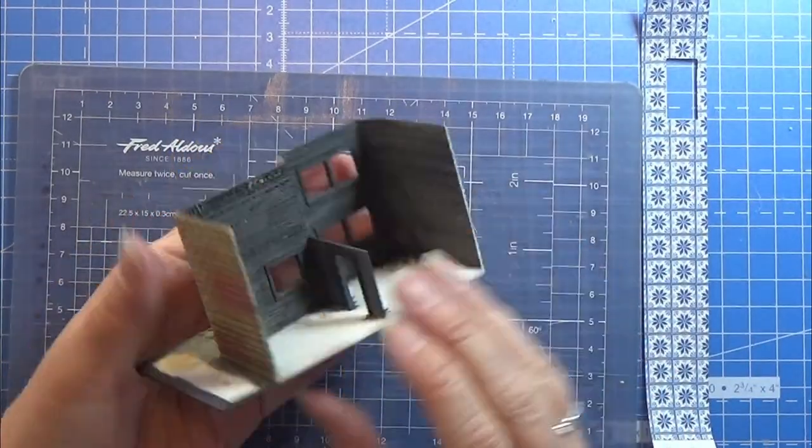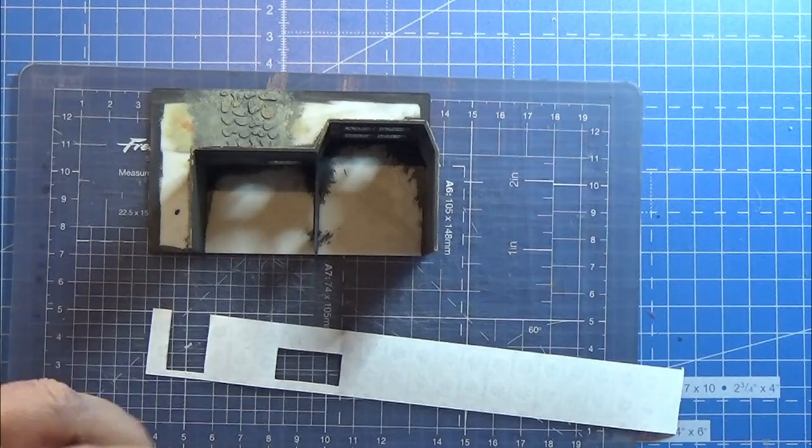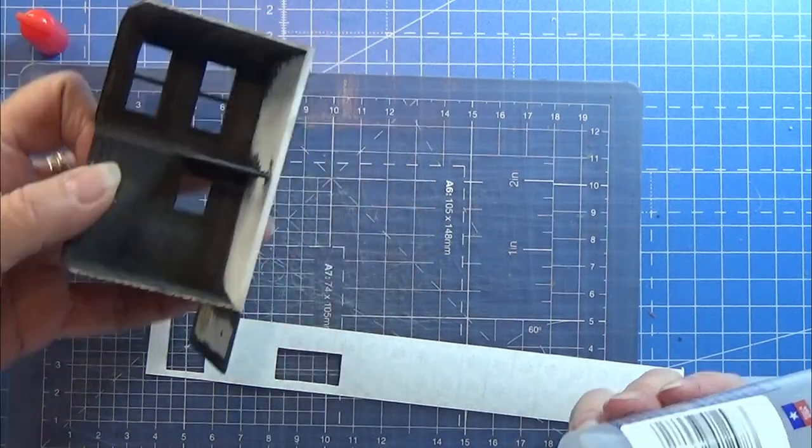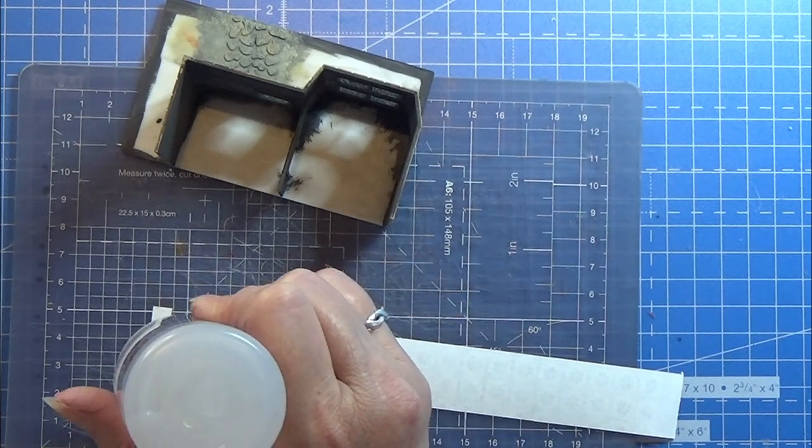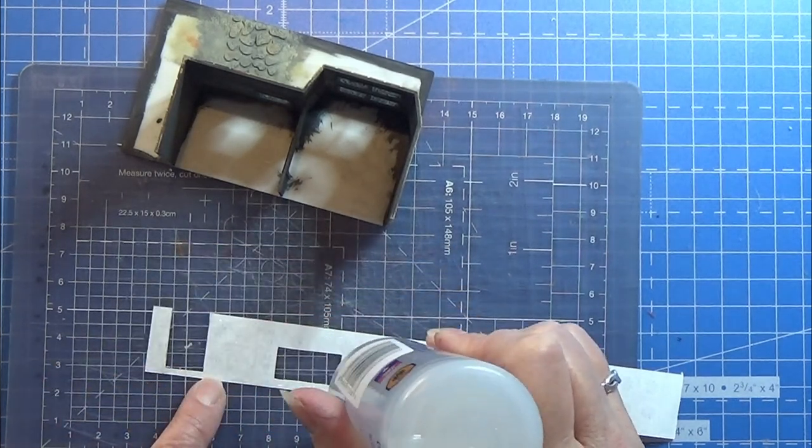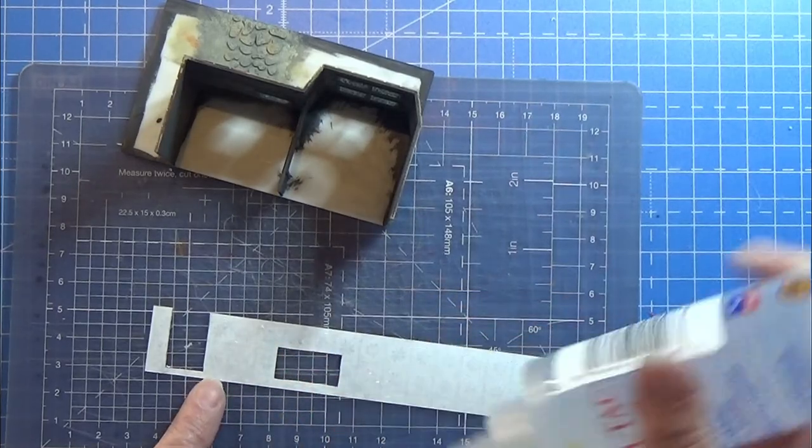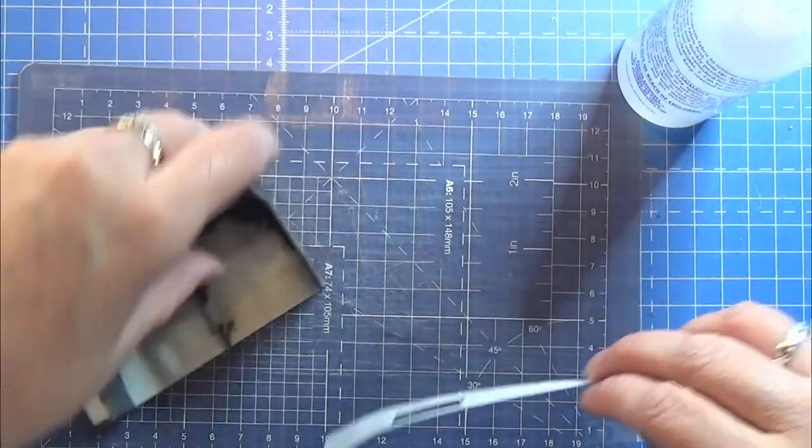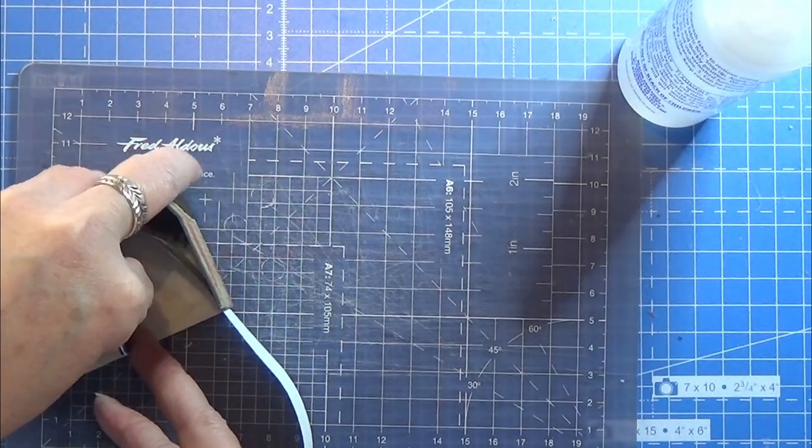I painted the inside of the house and dry brushed the rocks on the front. Now I'm ready with my wallpaper. I cut out the piece I need for the first room, putting some glue on it, and then transferring it into the room very carefully.